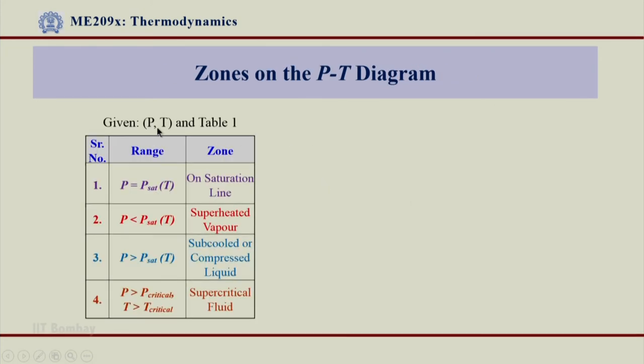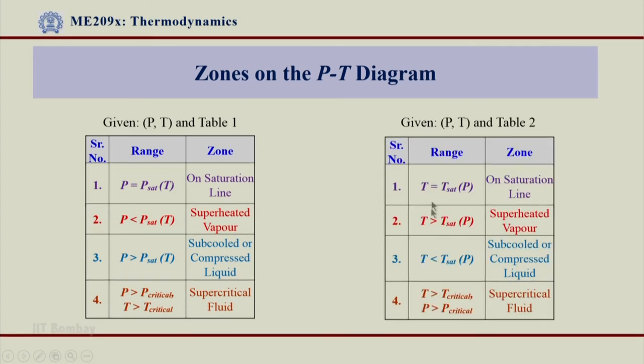In summary, I can show that from table 1, I can compare the pressure for a given temperature and from table 2, I compare the temperatures for a given pressure. T_sat is the given value and compare T with this T_sat and compare P with this P_sat. So, these two tables actually summarize what we saw just now by referring to table 1 and table 2 in order to decide a particular state lies in which zone.